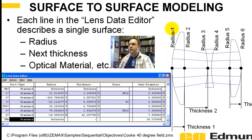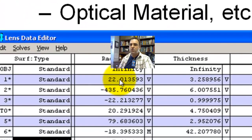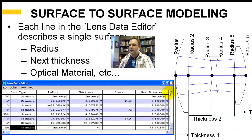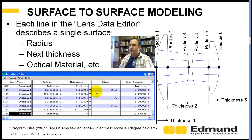Surface one here is described as a standard surface. Its radius is 22 — you've got to be careful of sign convention in this Cartesian coordinate system, so it's convex in this case. The thickness is 3.2. The glass is SK16, that's the media. We've set the aperture — this is a semi-diameter, so from the optical axis out to the edge is 9.5 millimeters. And you go through all the different surfaces to get your optical prescription.